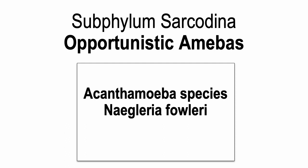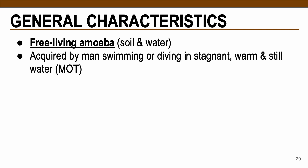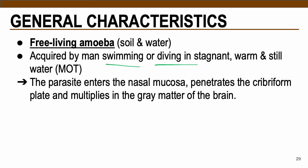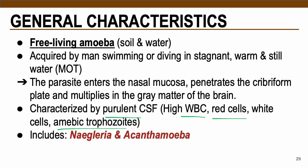We now move on to the opportunistic amoebas: Acanthamoeba species and Naegleria fowleri. These are considered free-living, naturally found in soil and water. They are accidentally acquired by humans through swimming or diving in stagnant, warm, still water via nasal aspiration. The parasite enters the nasal mucosa, penetrates the cribriform plate, and multiplies in the gray matter of the brain. This disease is characterized by purulent CSF with increased WBC, red blood cells, and the presence of amoebic trophozoites.